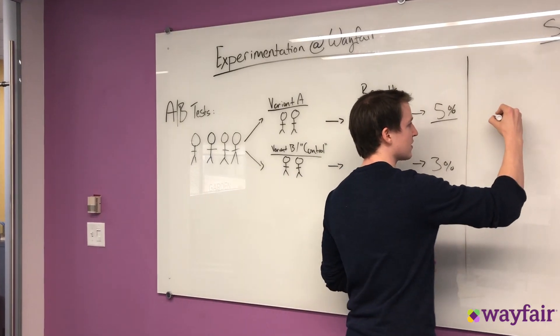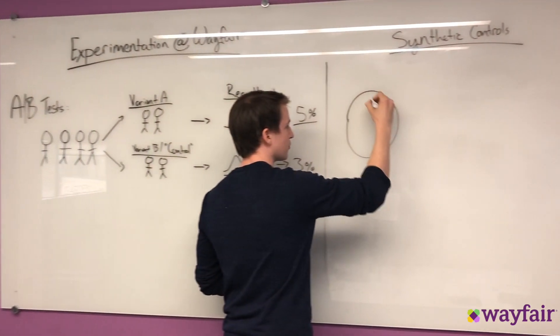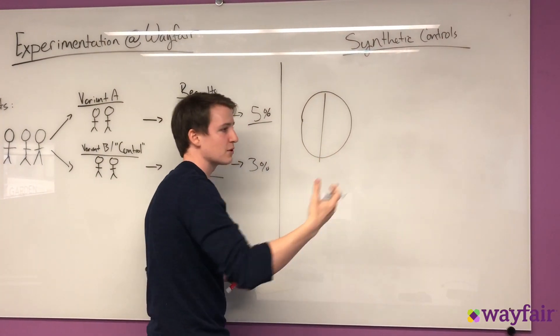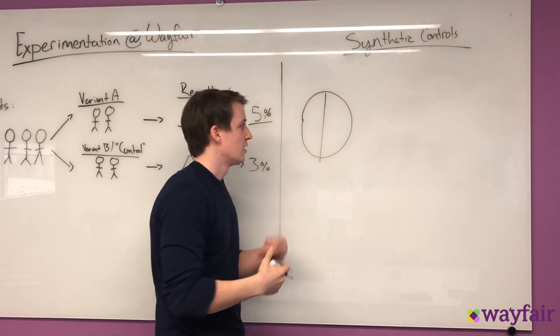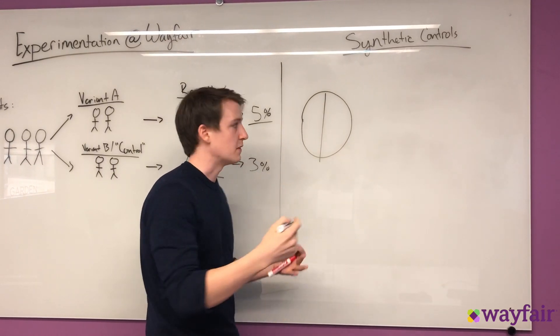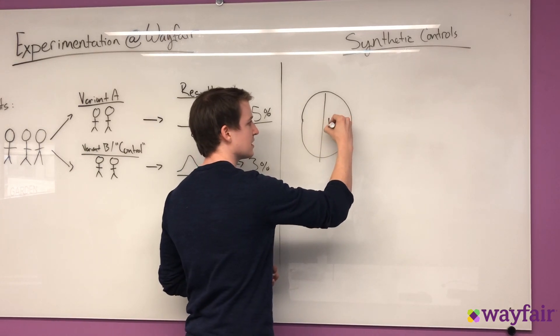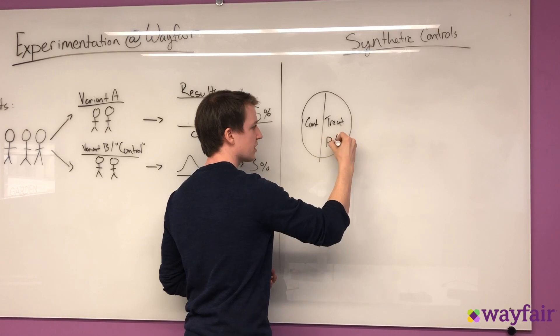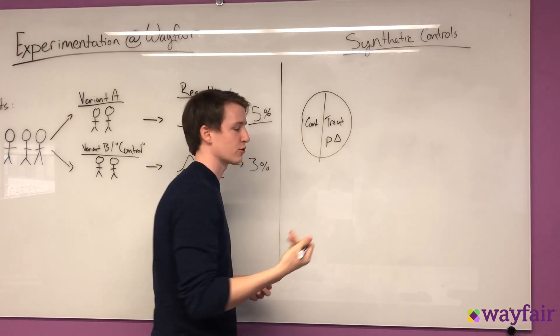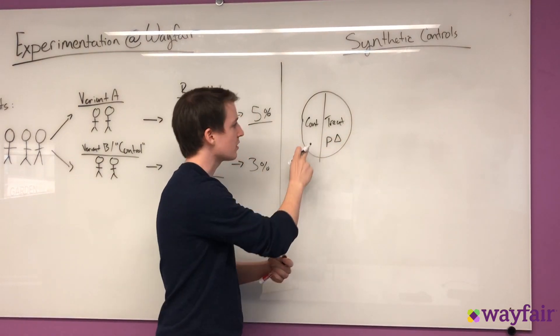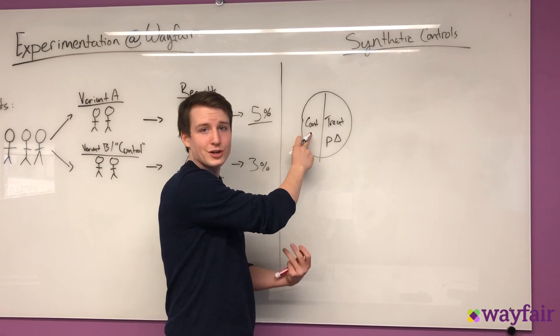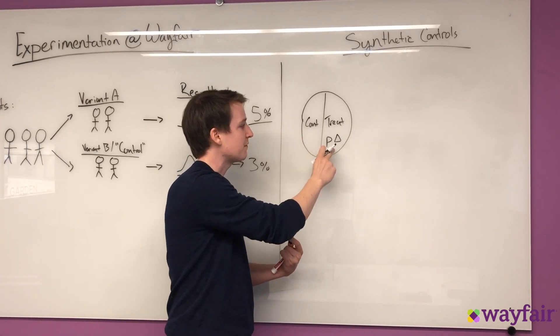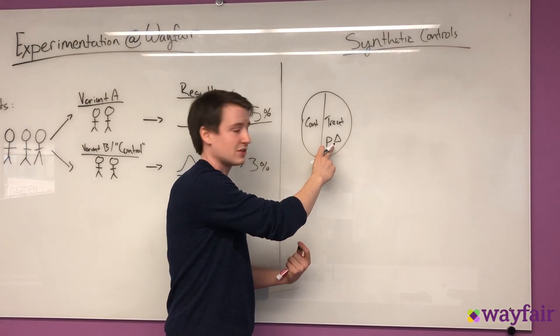So the idea is that, let's say that we just take a group of products, and they can be really just any products. They can be sofas, armchairs, even bare ottomans, and you split them into a treatment group and a control group. And you have some sort of price change on your treatment group, and you're trying to see whether or not the demand or the orders in your control group was affected by this treatment effect.